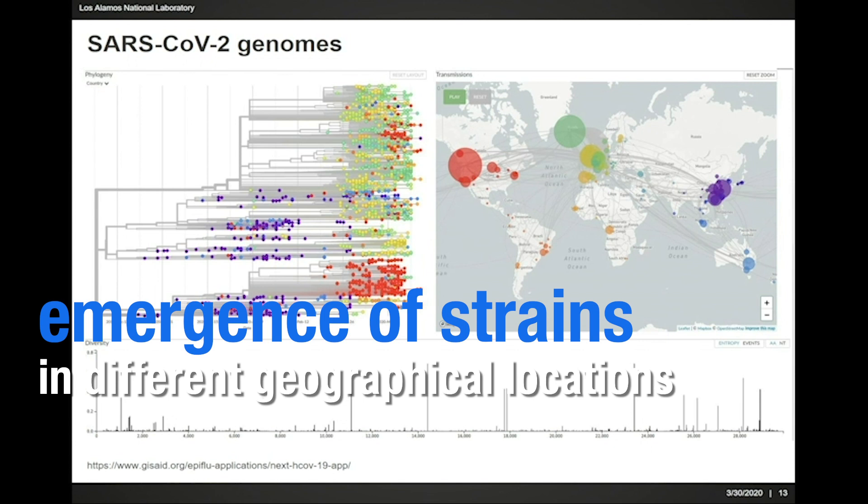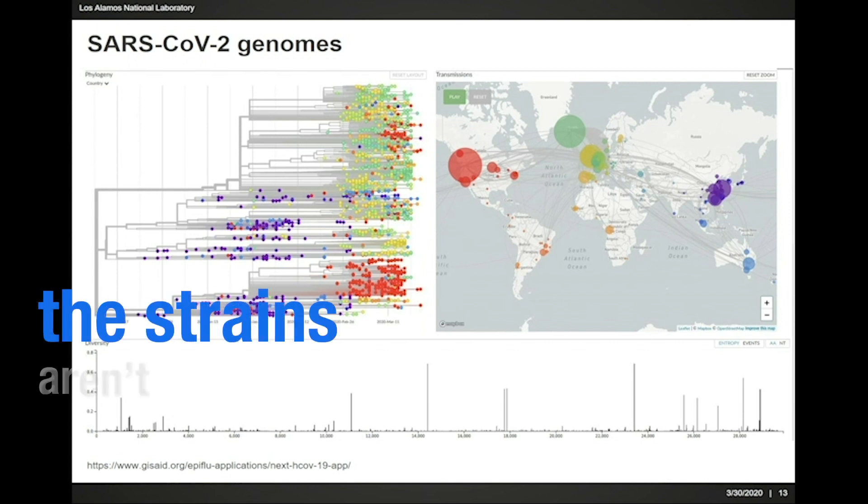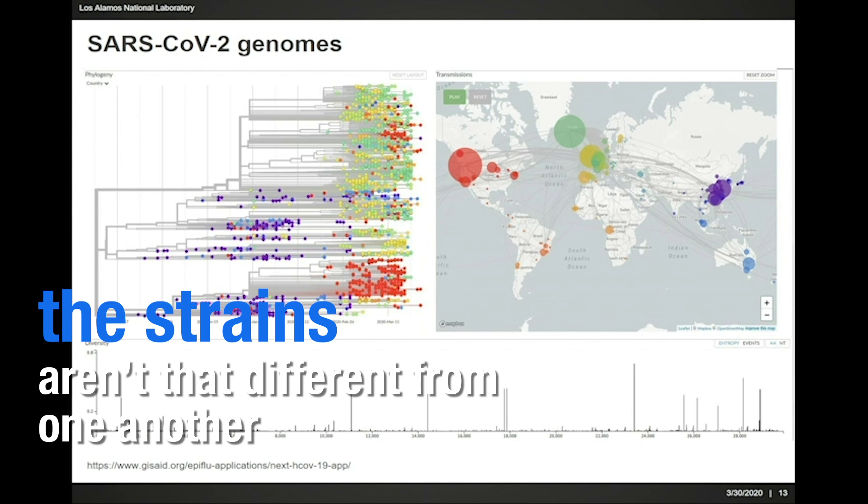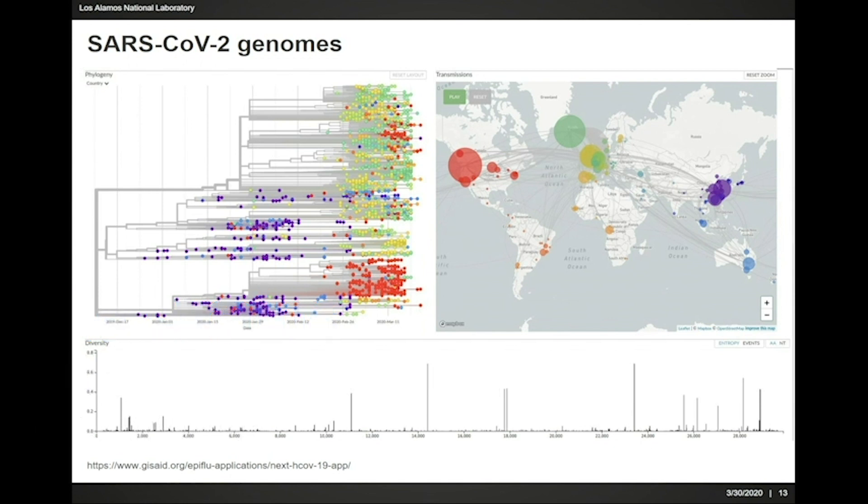Those strains, to be honest, are not that different from one another. They have a few mutations different, so it's kind of a stretch, in my personal opinion, to call them strains. But we can see already some geographic differences emerging from this particular outbreak.